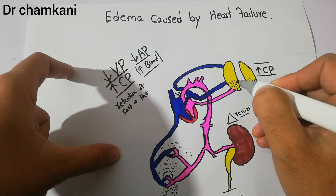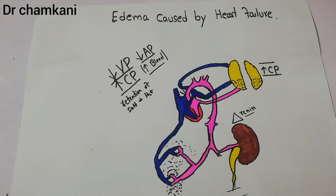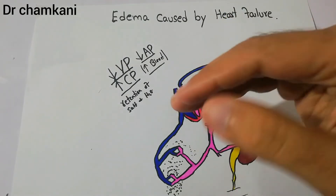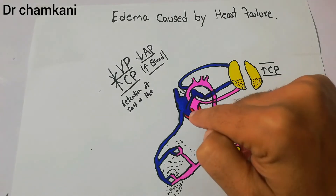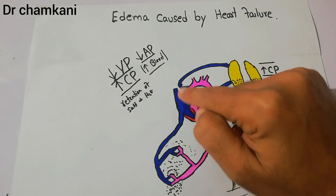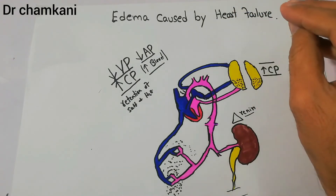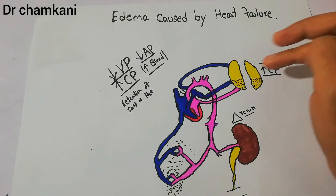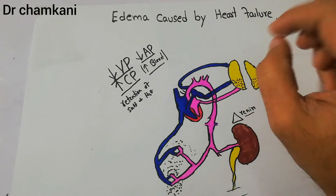Pulmonary edema is a life-threatening condition — it can lead to death. Depending upon the type of heart failure: if complete heart failure occurs, fluid will accumulate in the feet and slowly throughout the whole body and abdomen. But if only the left side of the heart has failed, the right side keeps pumping blood into the lungs, increasing capillary pressure in the pulmonary vessels, increasing filtration, and causing pulmonary edema.